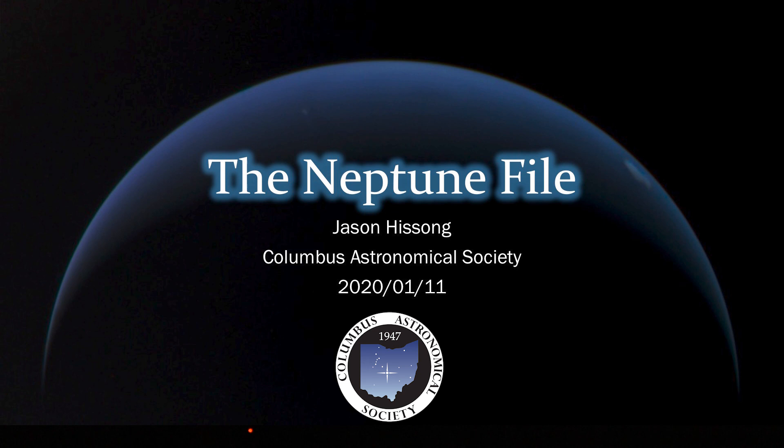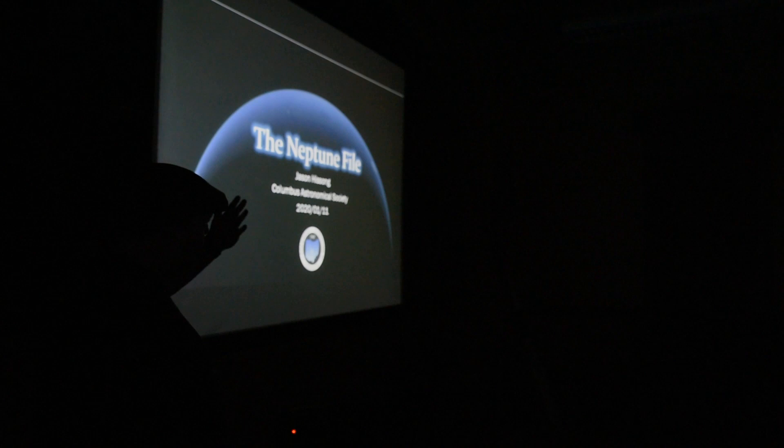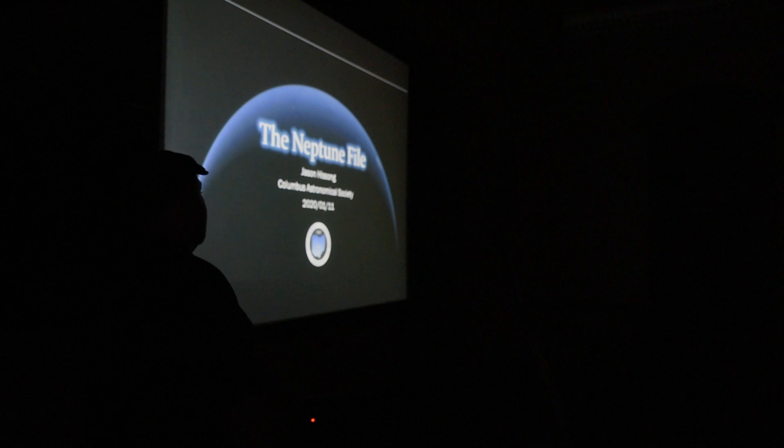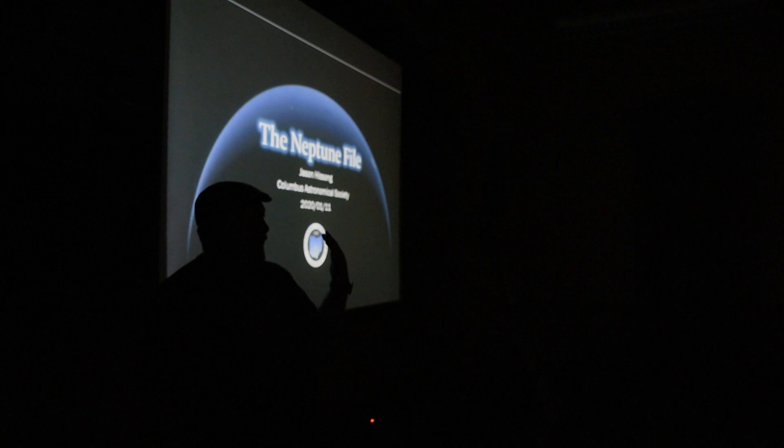Neptune was the first planetary or solar system body that was discovered not by empirical observations, like us looking at something in the sky and saying, hey, look, that's something new, like a comet or an asteroid or whatever. So Neptune was discovered based on mathematical prediction. And I'm going to be talking about how that happened and kind of a buildup of how we got to the point where we can do this kind of thing.